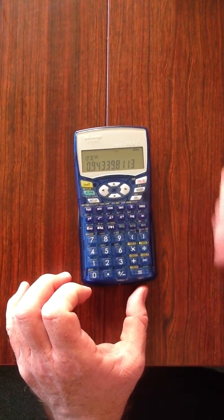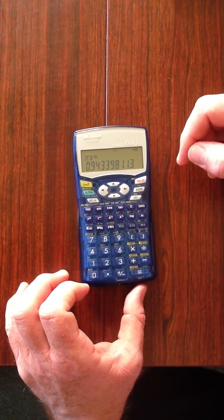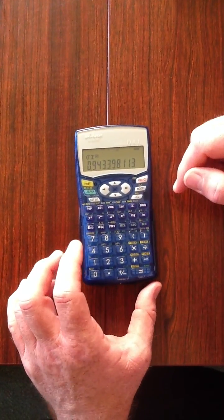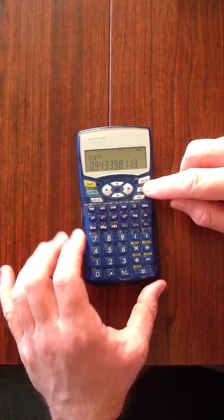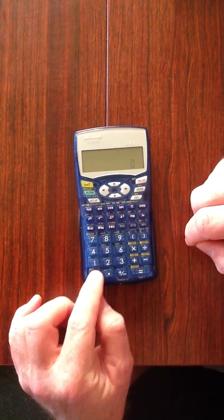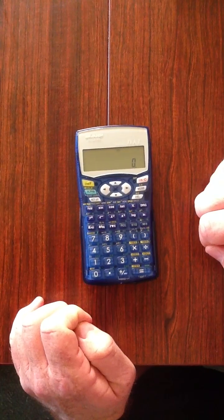And that's how we calculate the mean and the standard deviation of single scores in a frequency distribution table. And to clear our scores, clear our data, we go mode, zero, and that's it.